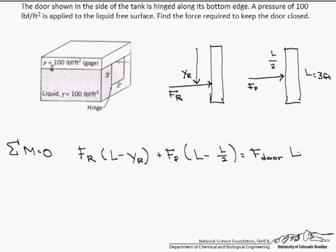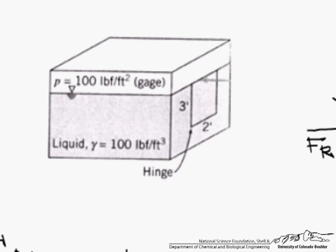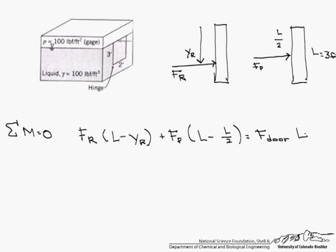What I mean by the lever arm: if you look at these, the lever arm is the distance between where the force is acting, or the resultant force, and the hinge. So let's start by solving for F sub r, which is our gamma times h sub c times A.